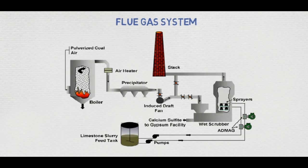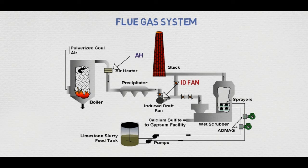This shows the flue gas system. When combustion takes place in the boiler, it generates ash and flue gas. The flue gas is sucked by the ID fan — the induced draft fan — and passes through the air preheater and then to the ESP, the electrostatic precipitator. Here, the dust particulates are collected, and the rest of the ash is fed into the wet scrubber through spray nozzles and goes to the slurry feed tank. The flue gas is exhausted through the chimney.